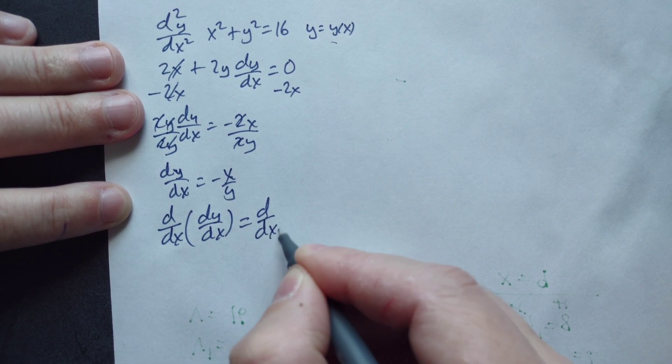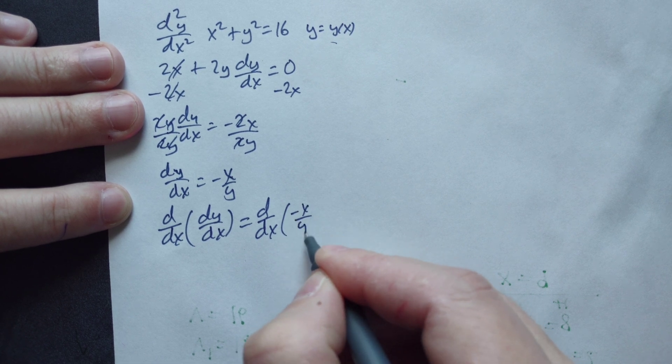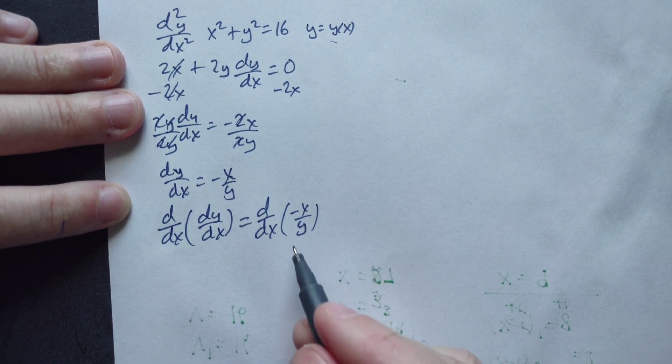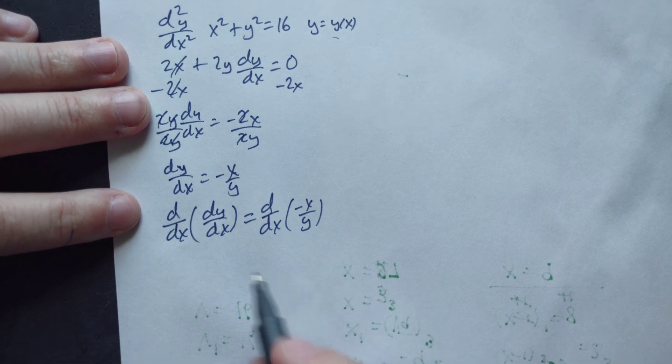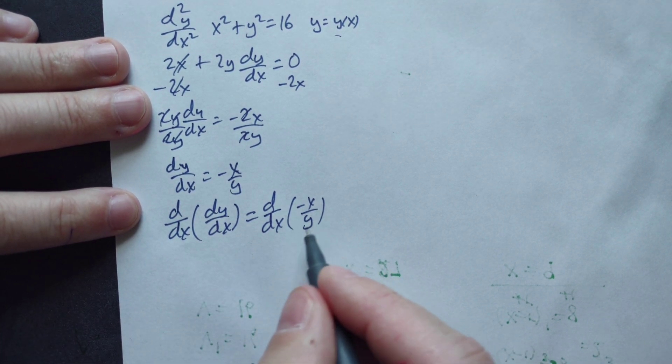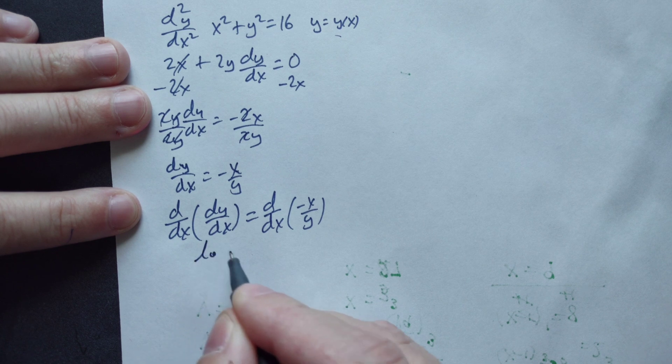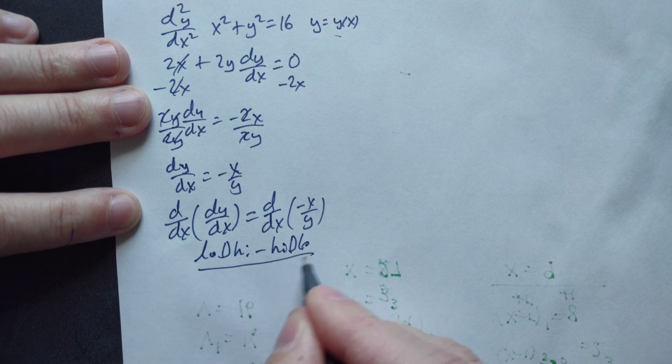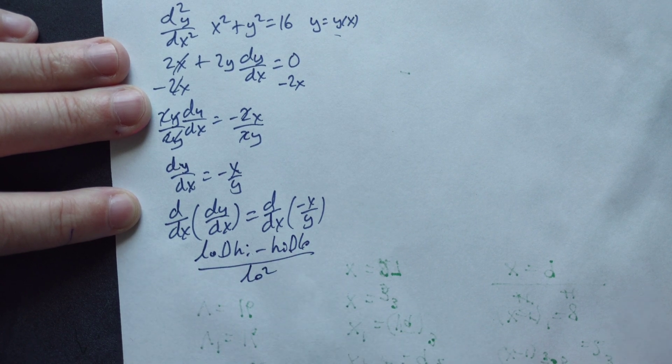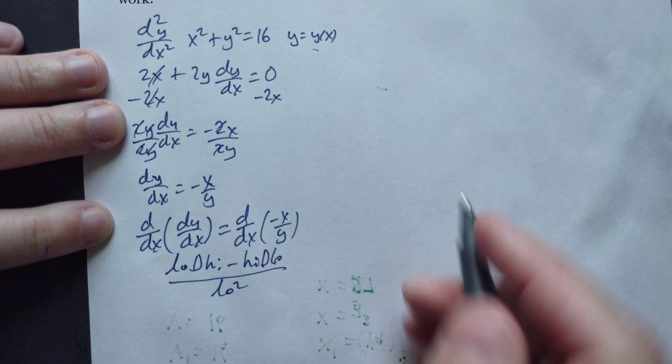Do the same thing on the right side, the derivative with respect to x of negative x over y. Because y is a function of x, when you differentiate this part, you have to use the quotient rule. As a reminder, it looks like low d high minus high d low over low squared.